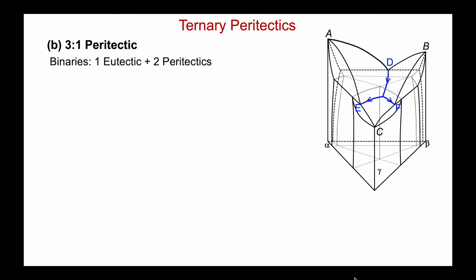Here are the liquidus curves coming out of each binary system, meeting at G — the peritectic liquid. We need to be careful about reading the arrows: we're coming down in temperature out of the eutectic in the AB system, but then coming out of the peritectic reaction, the liquidus moves to lower temperatures in both other binaries. So we have one incoming and two outgoing — one in and two out.